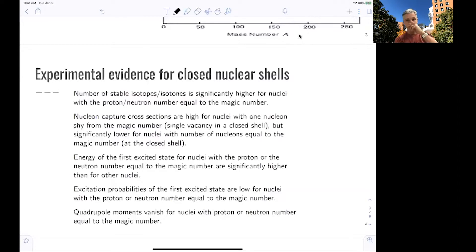The energy of excited states for nuclei with a proton or neutron number equal to the magic number are significantly higher than for other nuclei. And the excitation probabilities of the first excited states are low for nuclei with proton or neutron or both numbers equal to the magic numbers.